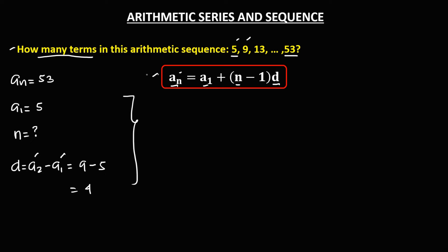To solve now for n from this formula, we have a sub n — that's positive 53 — then a sub 1 — that's positive 5 — then plus n minus 1 times the common difference, positive 4.